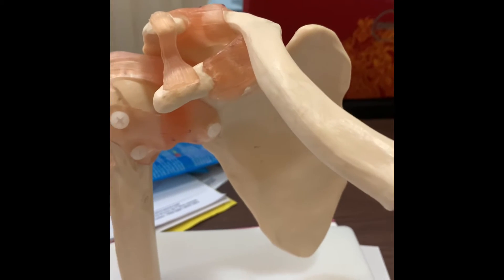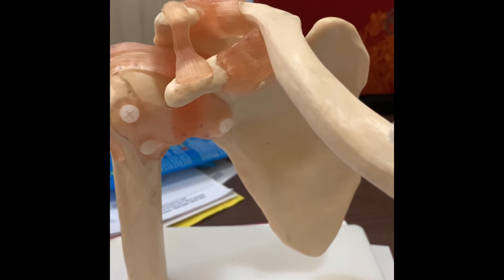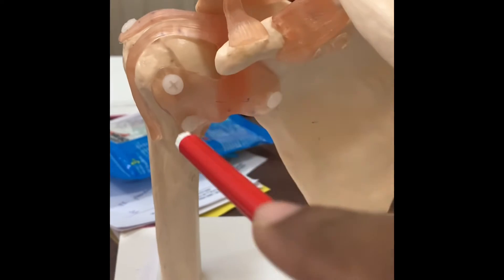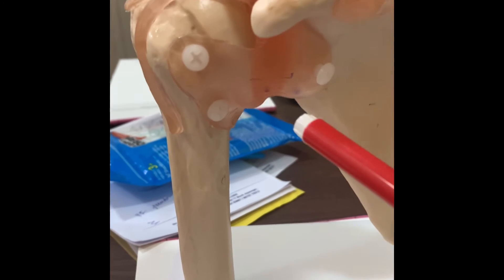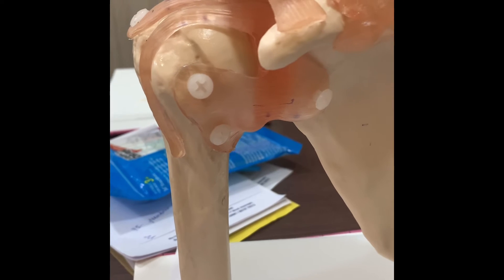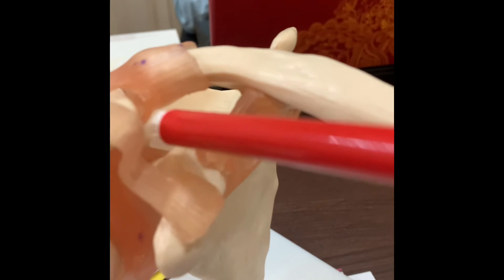We can see the clavicle or collarbone in the front, and the AC joint where the ball of the head meets the socket. Those are the muscles—the subscapularis in the front of the shoulder. Now coming to the small piece of bone in the front, that is the coracoid process.